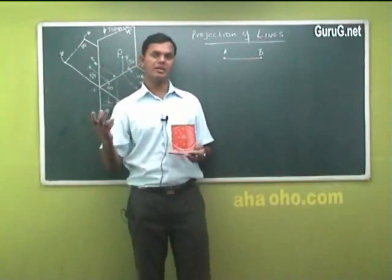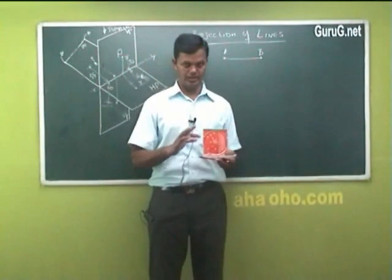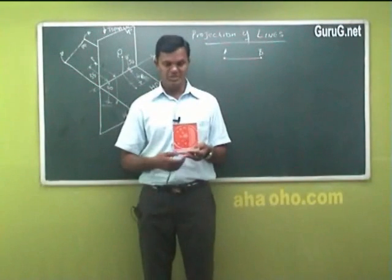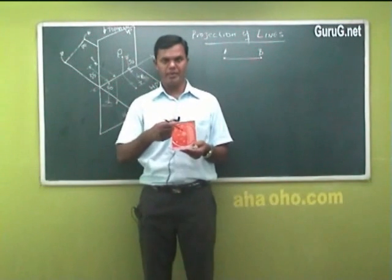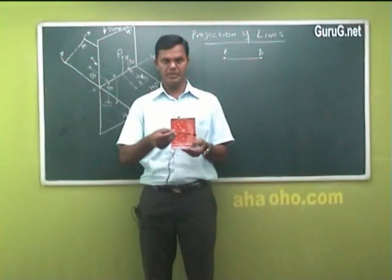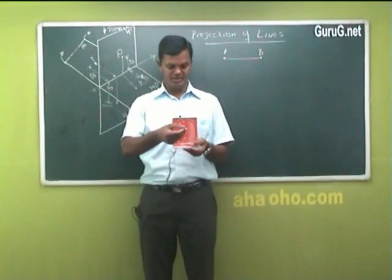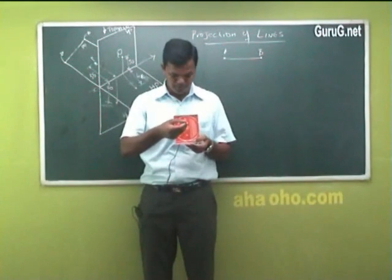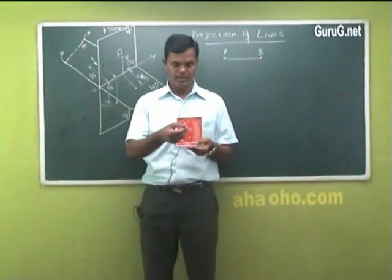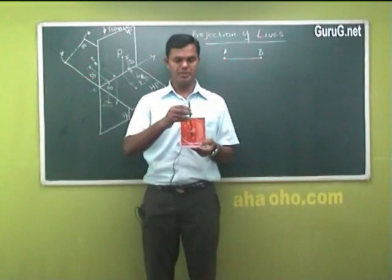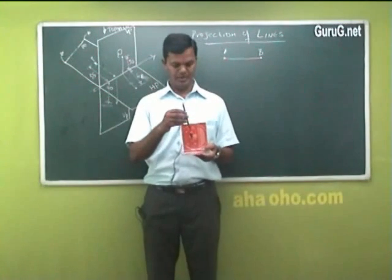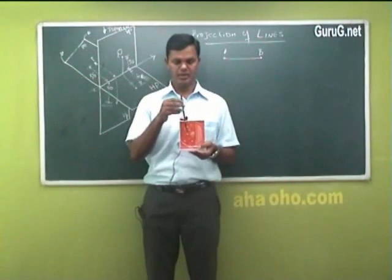This parallel and perpendicular — it is a common idea we understand. It is parallel to both planes, or perpendicular to one plane. For example: perpendicular to VP and parallel to HP, or perpendicular to HP and parallel to VP. These are the easy cases.